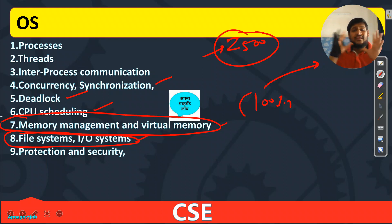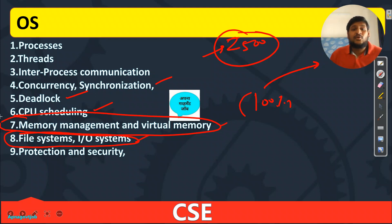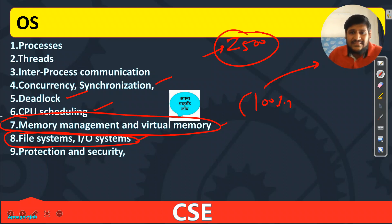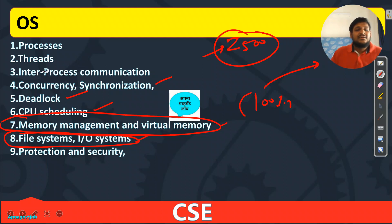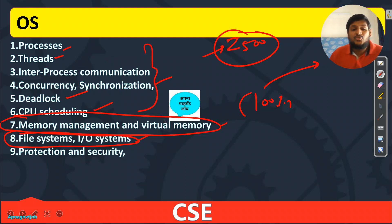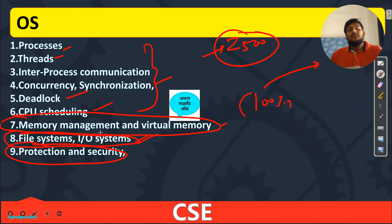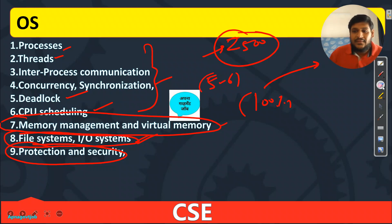If you understand the mindset of your competitors — what they are not doing — definitely we will step ahead. All OS topics are important. Do not skip the less popular ones like File System and I/O protection and security. OS gives five to six questions and every mark counts given the low vacancy count.